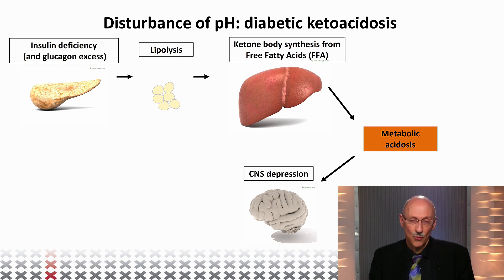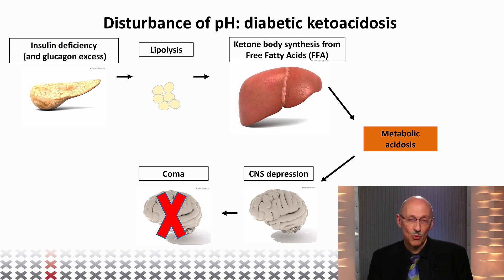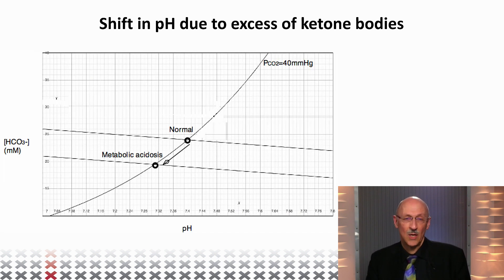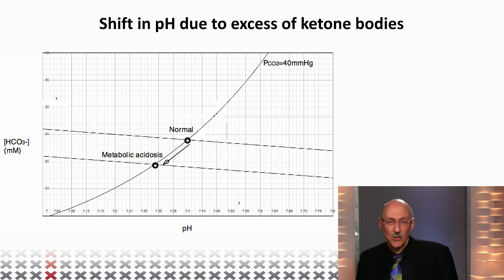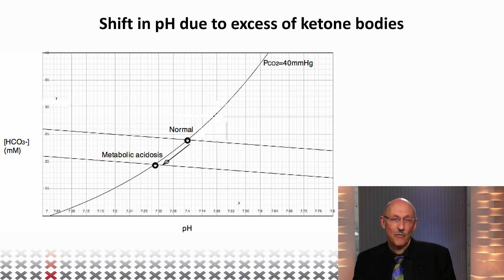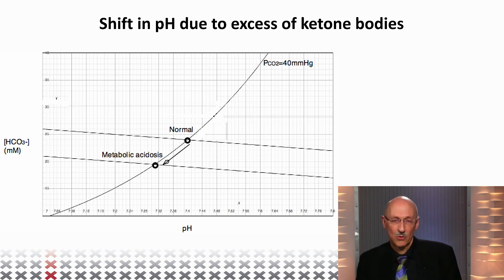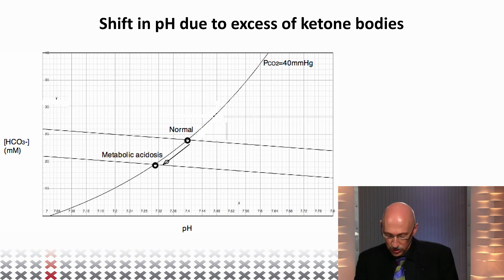This can lead to all kinds of problems in brain functioning and has to be treated as quickly as possible; otherwise you go into coma and possibly death will result. Looking at our Davenport diagram, in this case we have metabolic acidosis. The CO2 exchange is still normal, but the blood pH is lower because the carbonate buffering power is overpowered by the massive secretion of ketone bodies, giving you a lower blood pH.